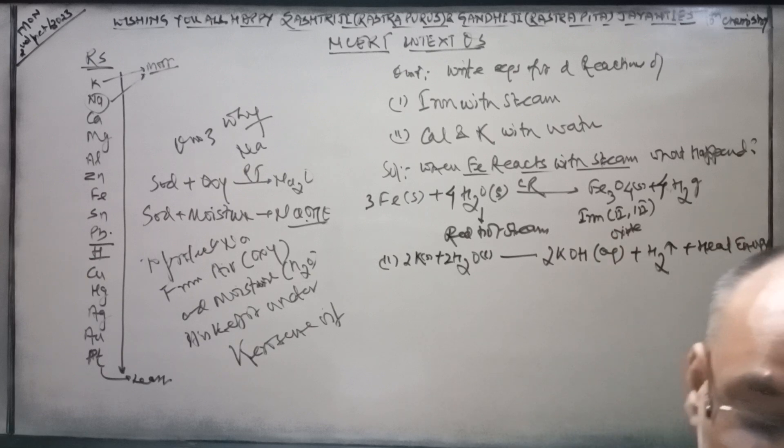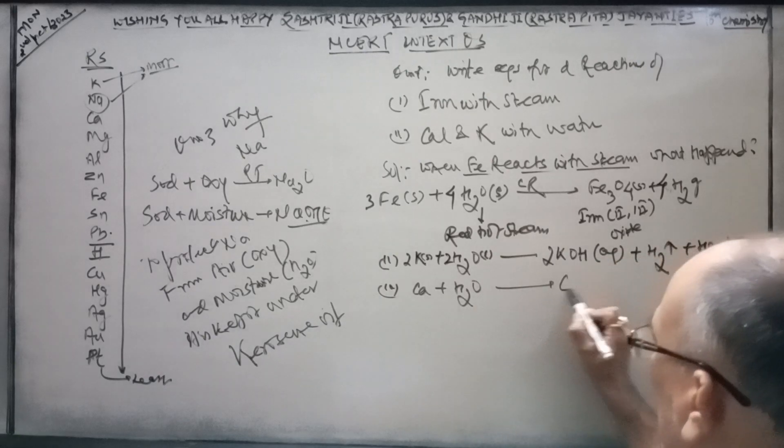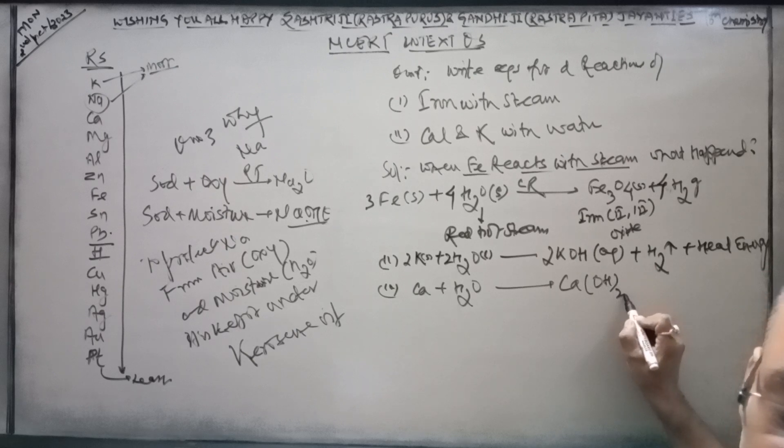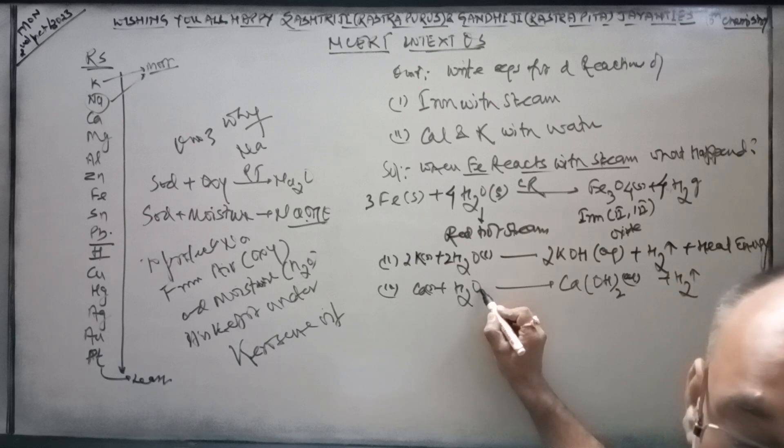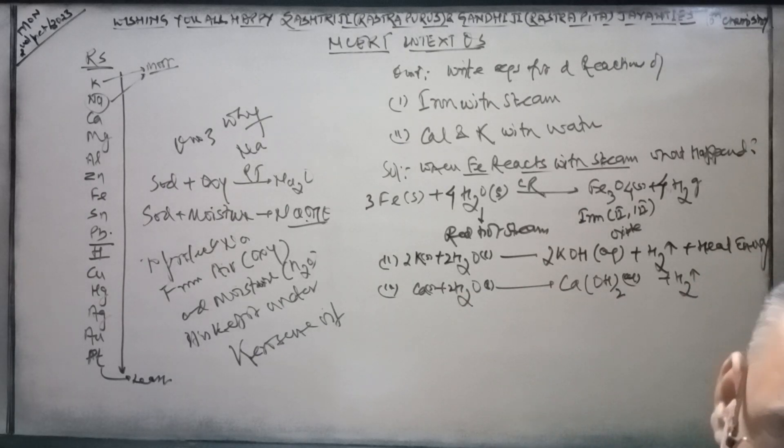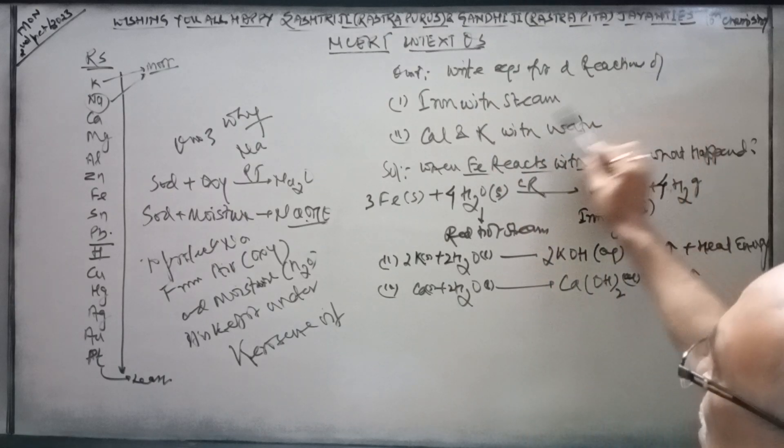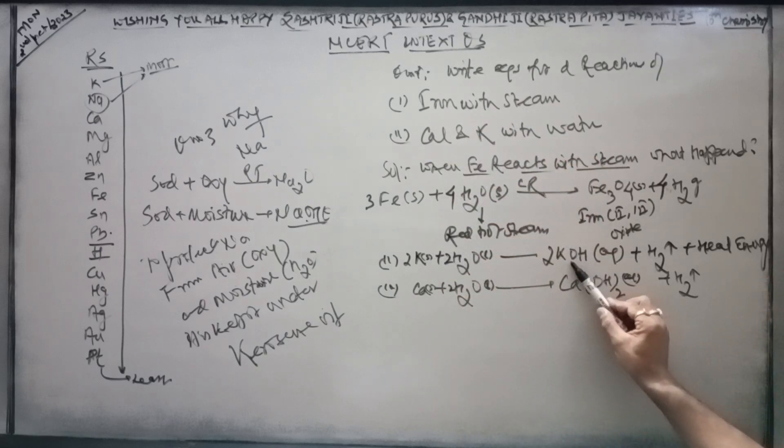When calcium reacts with water, it will make calcium hydroxide and release hydrogen gas. Ca (solid) plus 2 H2O (liquid) produces Ca(OH)2 (aqueous solution) plus H2 (gas). Similarly, potassium will make potassium hydroxide and calcium hydroxide.